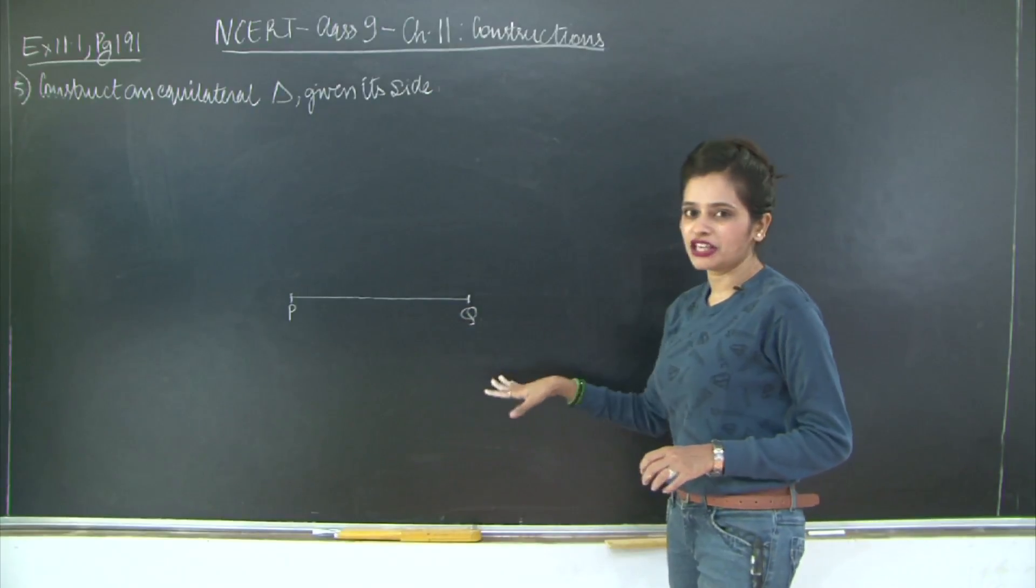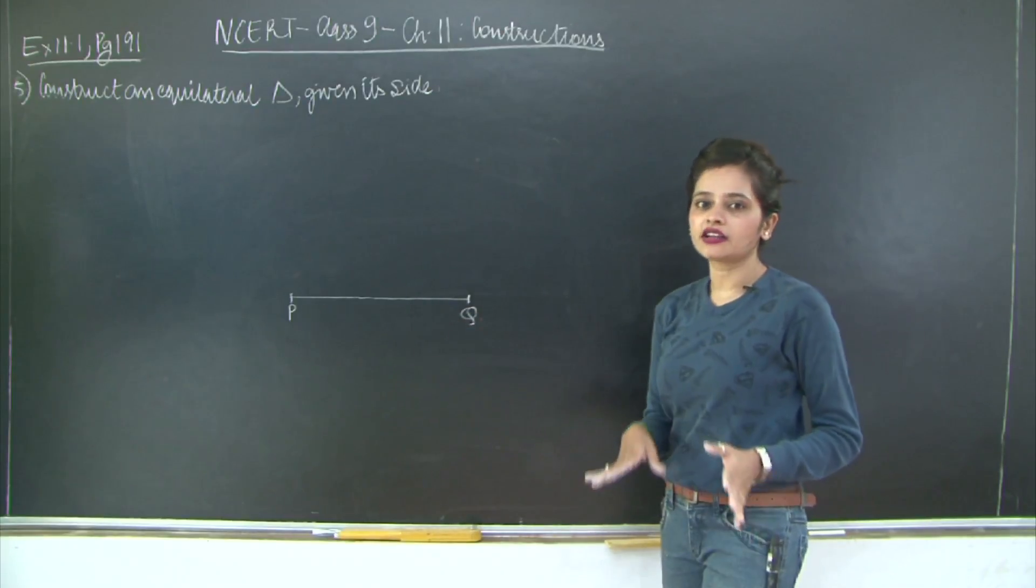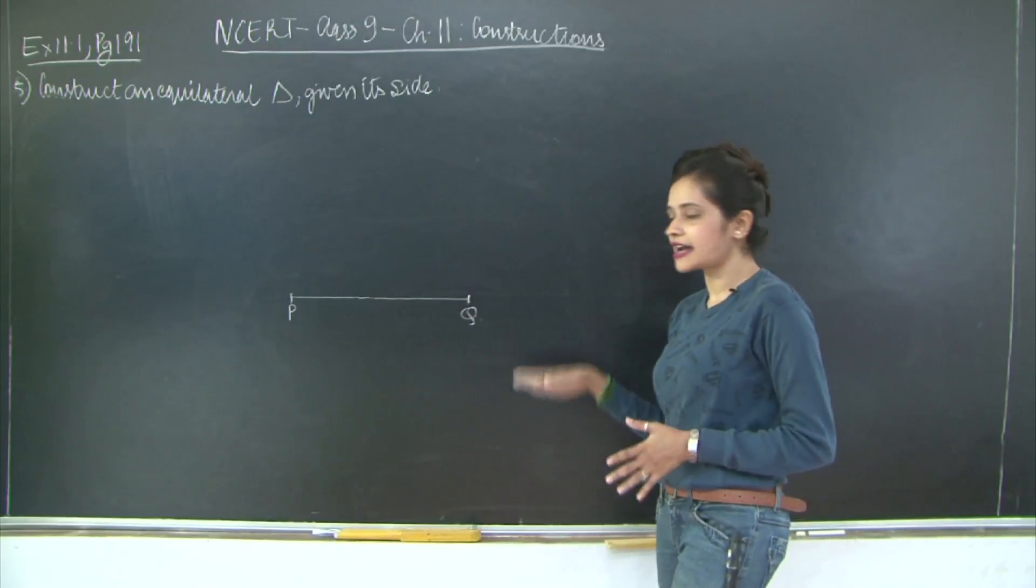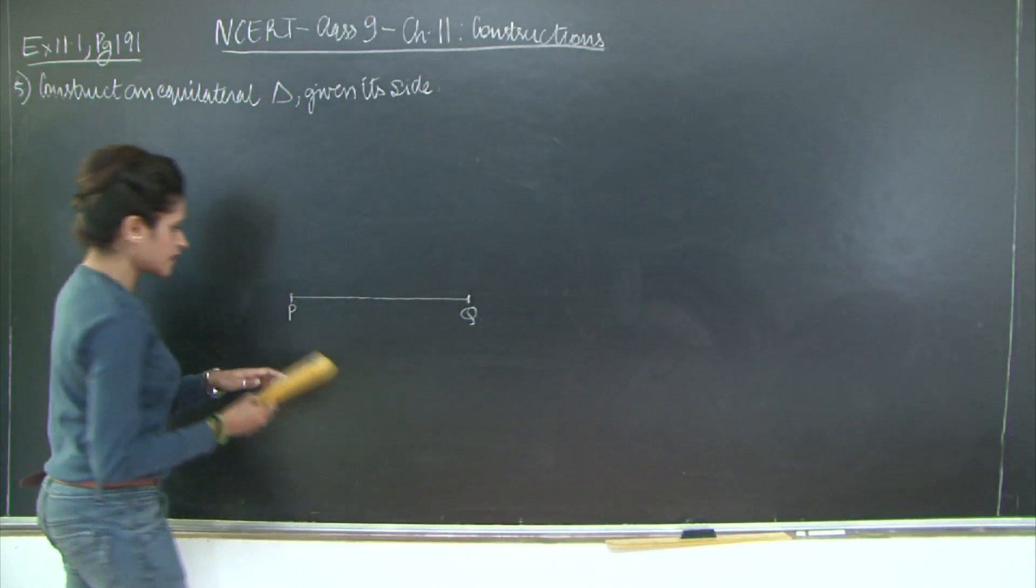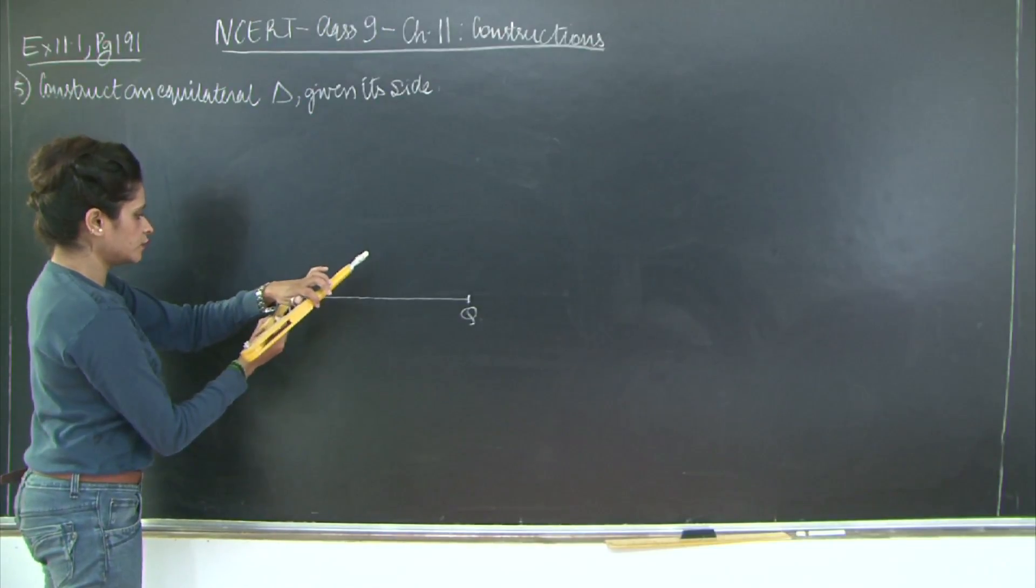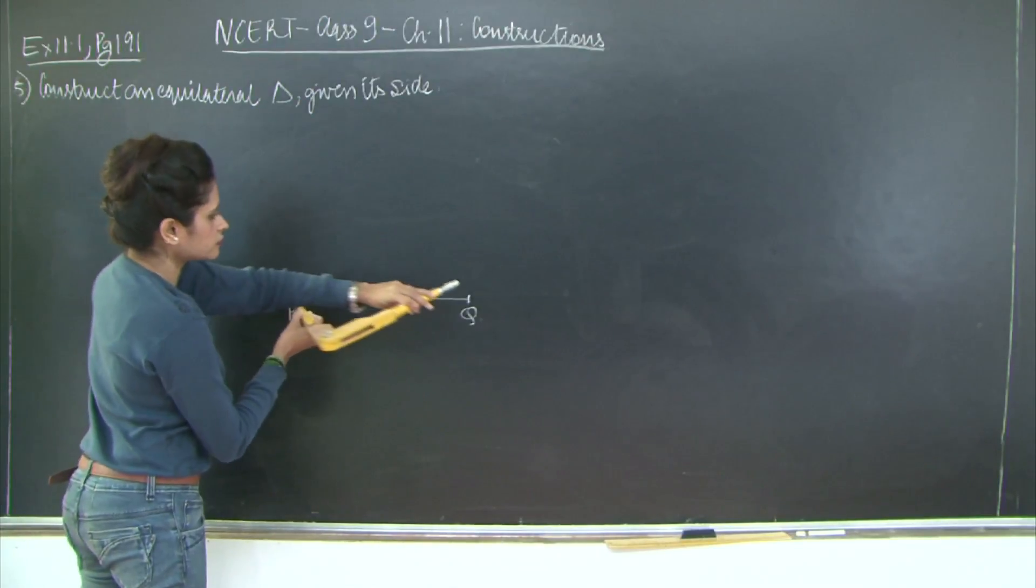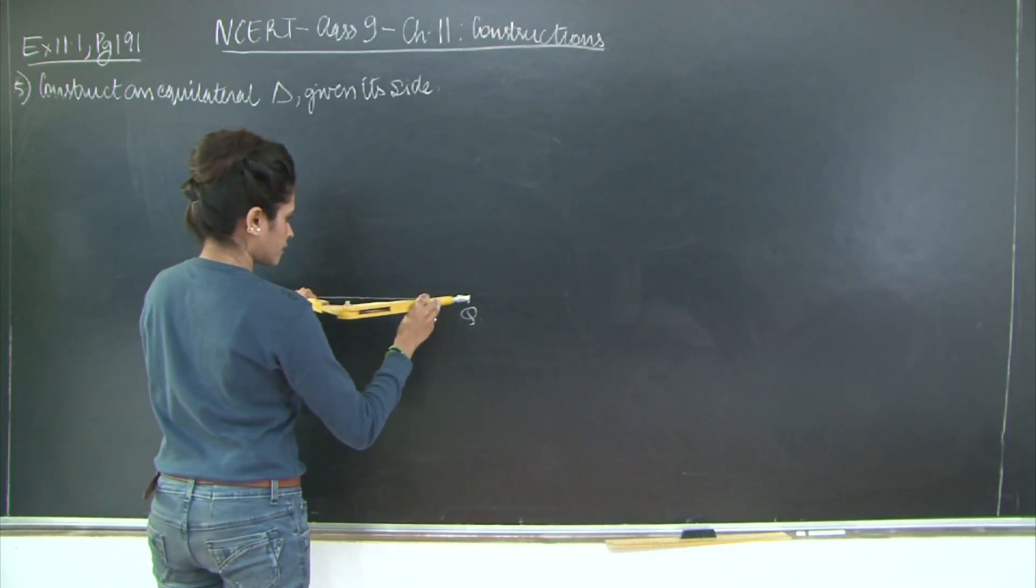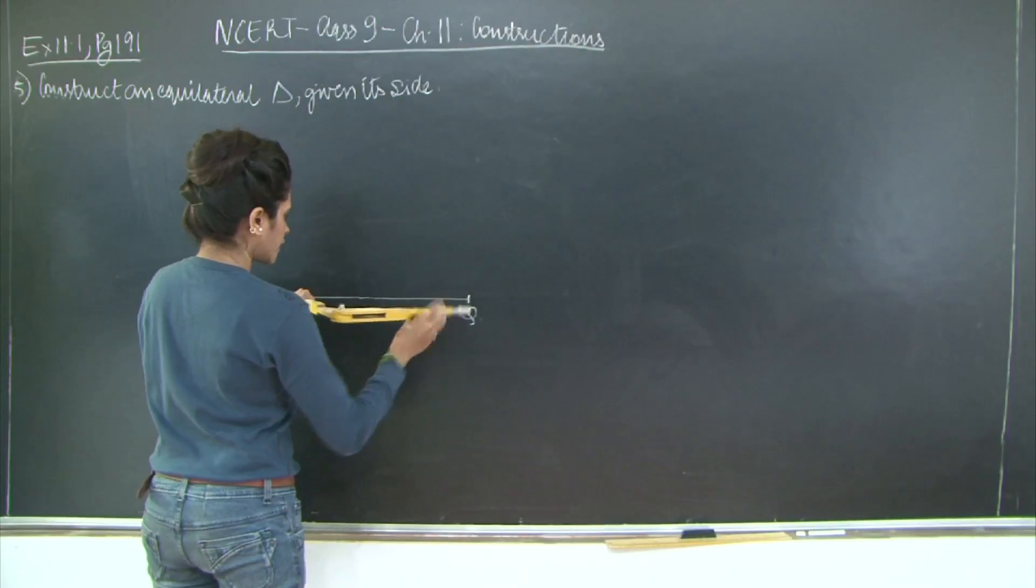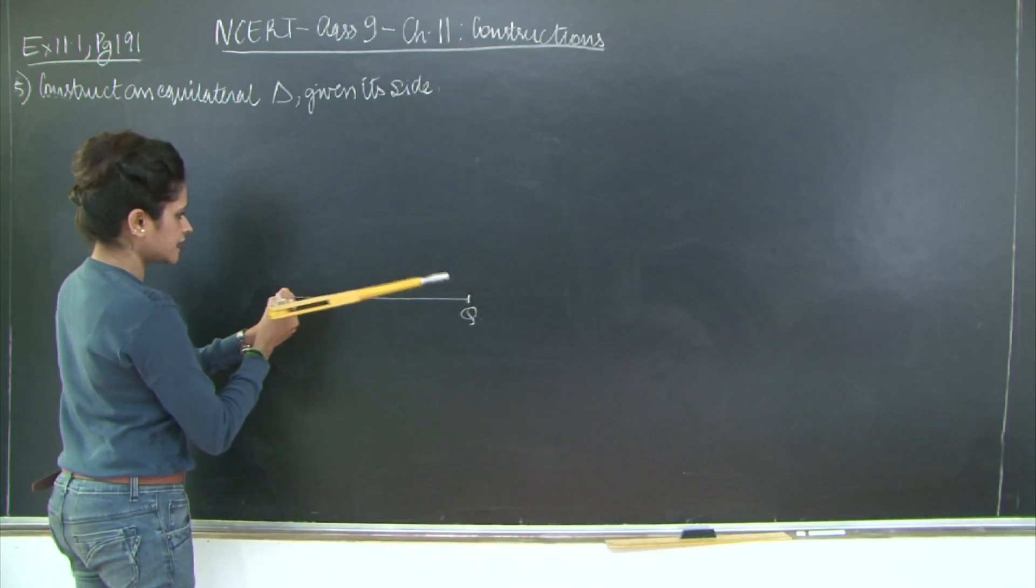So now we have PQ as one side. We know that the remaining two sides will also be the same length as PQ. So what I'm going to do - this construction is very simple - I'm going to take this length PQ and construct an arc.